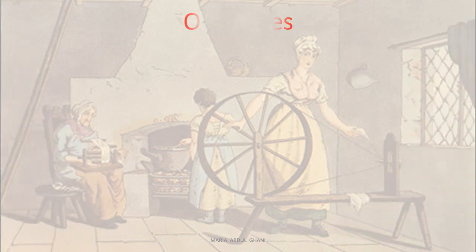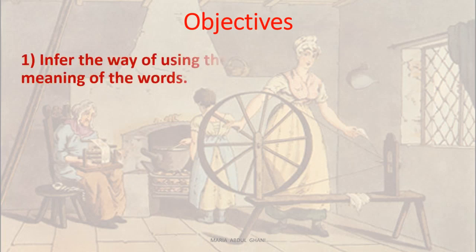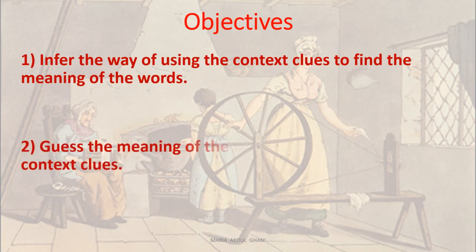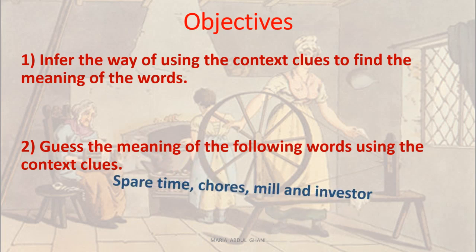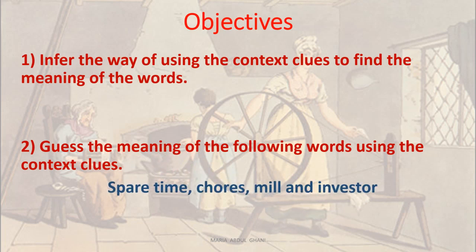Hey all, our objectives for today will be two. First, infer the way of using the context clues to find the meaning of the words. Second, guess the meaning of the following words using the context clues: spare time, chores, mill, and investor.